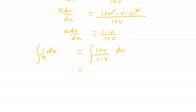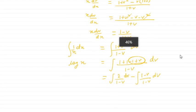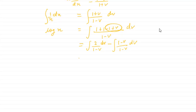The left side integrates easily to log x. For the right side, we can't integrate (1 + v)/(1 − v) directly. So in the numerator, I add and subtract 1: I write (1 + v) as 2 − (1 − v). This gives 2/(1 − v) minus (1 − v)/(1 − v), which separates the integral into manageable parts.